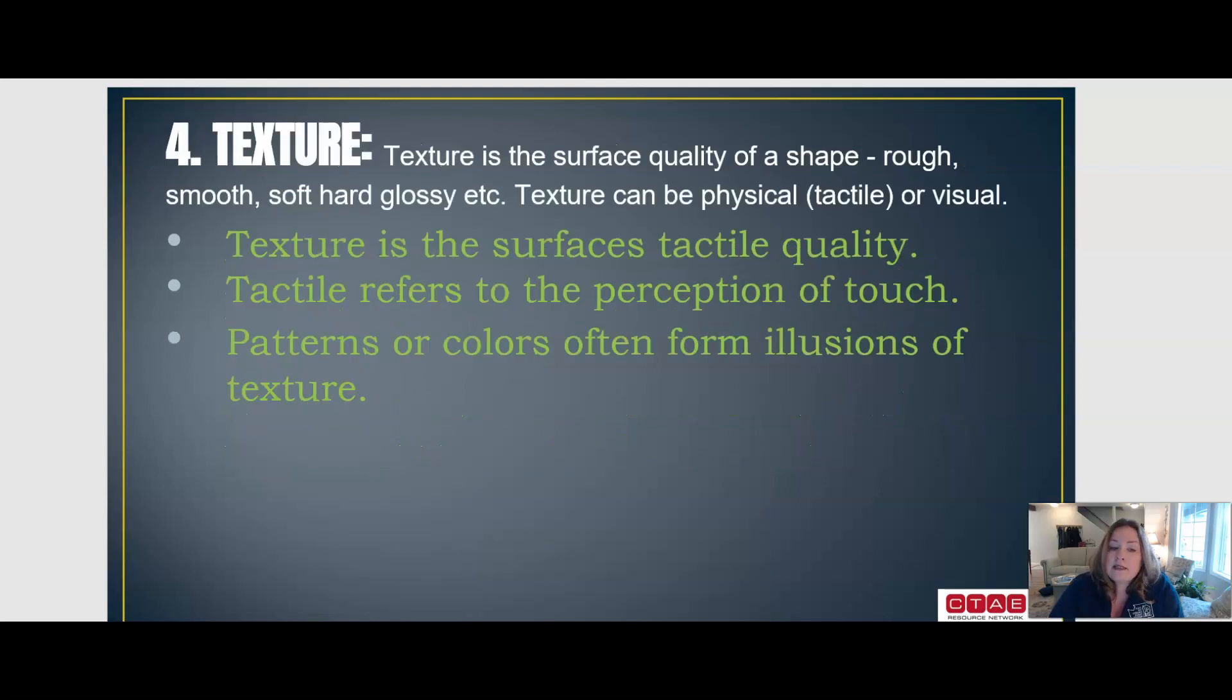Our fourth element is texture. Texture is the surface quality of a shape—rough, smooth, soft, hard, glossy. Texture can be physical, meaning tactile, something that you could touch, or visual that you can see.